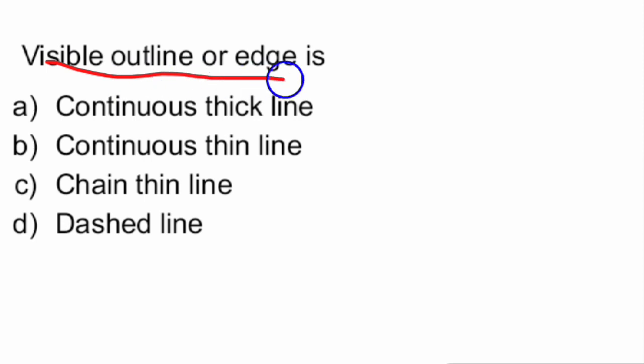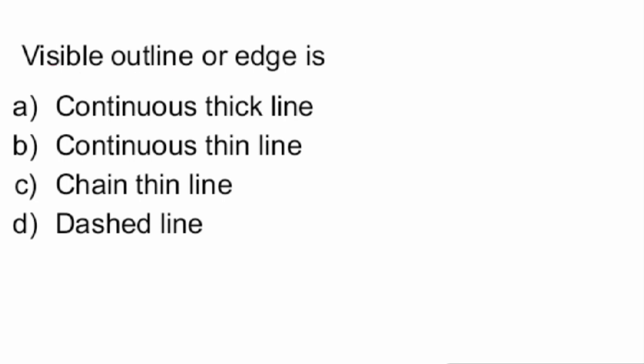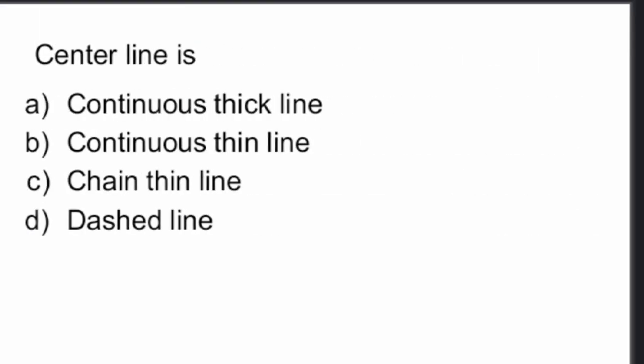Visible outline or edge is what? Initially one might say chain thin line, but the correct answer is continuous thick line. Visible outline or edge is represented by a continuous thick line.